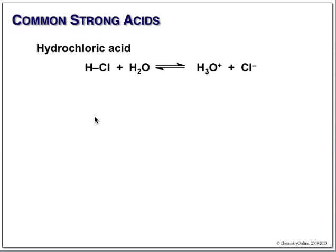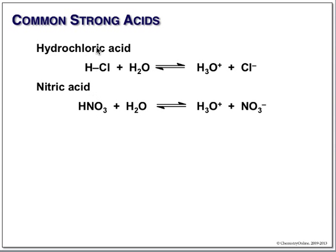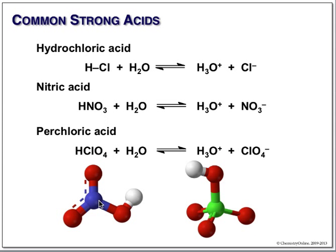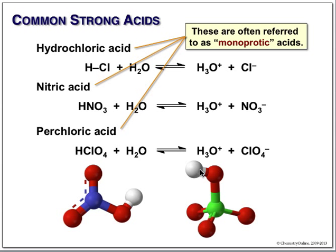Strong acids that we commonly encounter: hydrochloric acid — HCl plus water gives hydronium and chloride. Nitric acid — we break the OH bond to form hydronium and nitrate. Perchloric acid — we break the OH bond to get hydronium and the chlorate anion. Remember that the hydrogen is transferred as a proton, that is, a hydrogen without electrons. Therefore, we refer to these as monoprotic acids — they donate one proton to water.